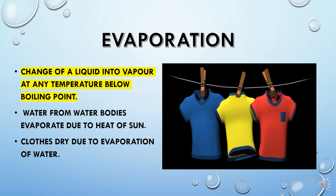There are various examples of evaporation in daily life. One is that water from water bodies in the water cycle always evaporates due to the heat of the sun. Also, when you wash your clothes and dry them in the sun, they get dried because of evaporation of the water absorbed by the clothes.